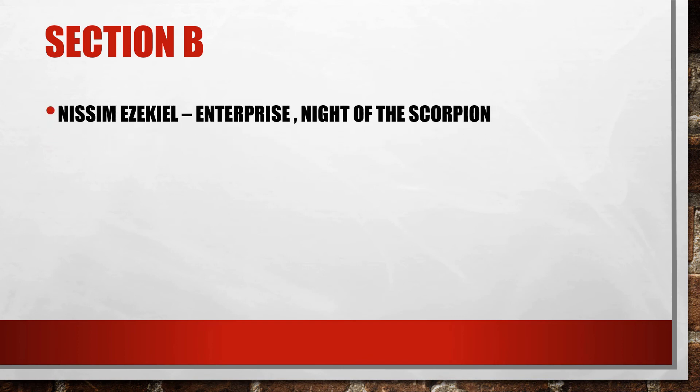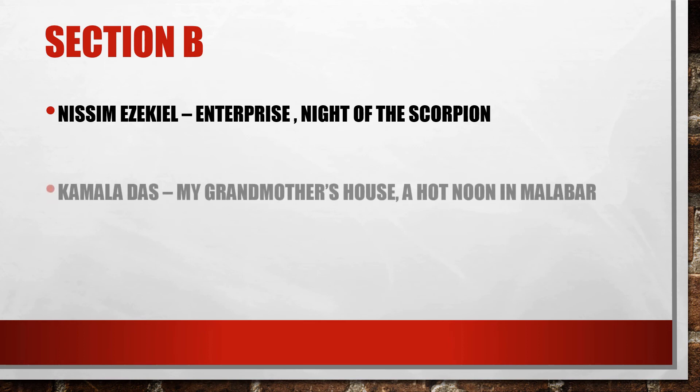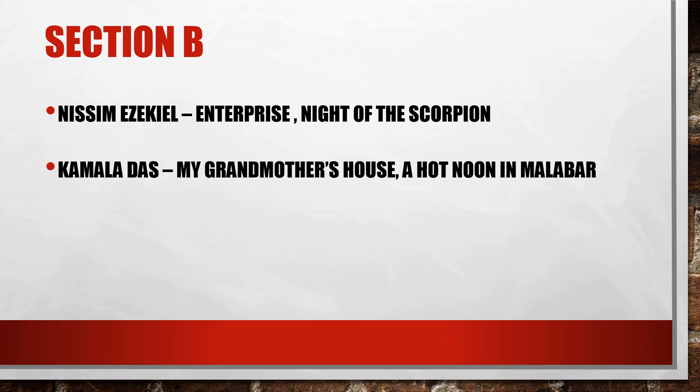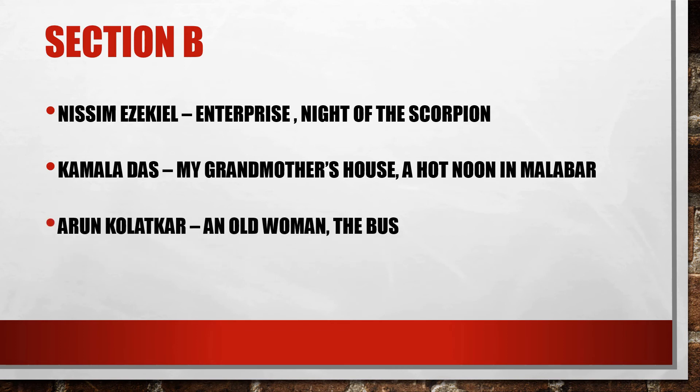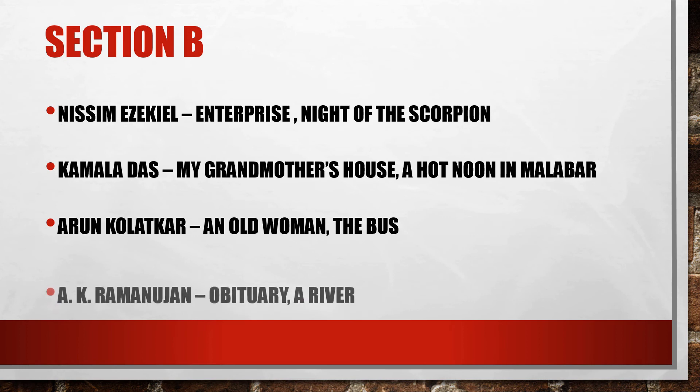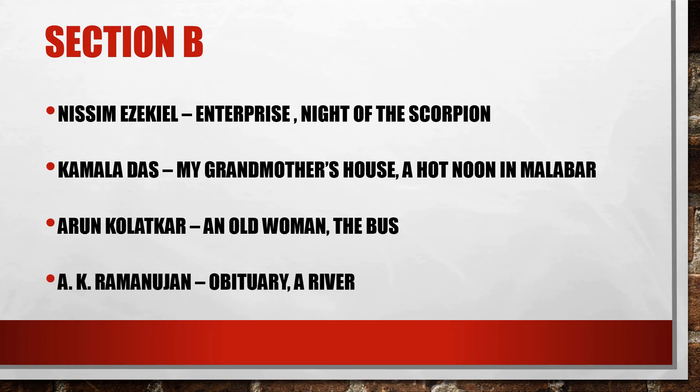Section B consists of Indian poets. The first is Nissim Ezekiel with 2 poems: Enterprise and Night of the Scorpion. Then Kamala Das with 2 poems: My Grandmother's House and A Hot Noon in Malabar. Arun Kolatkar's An Old Woman and The Bus, and A.K. Ramanujan's Obituary and A River.